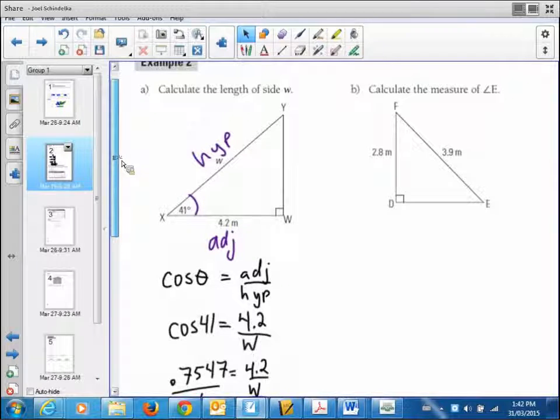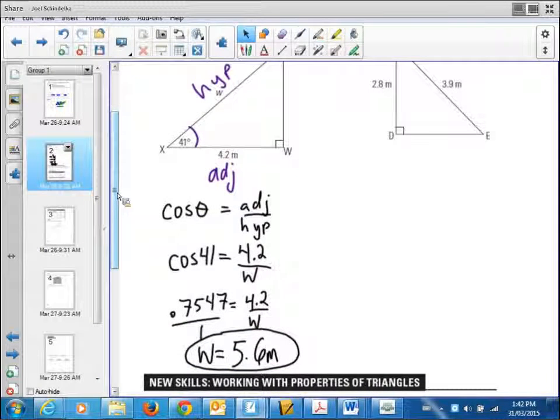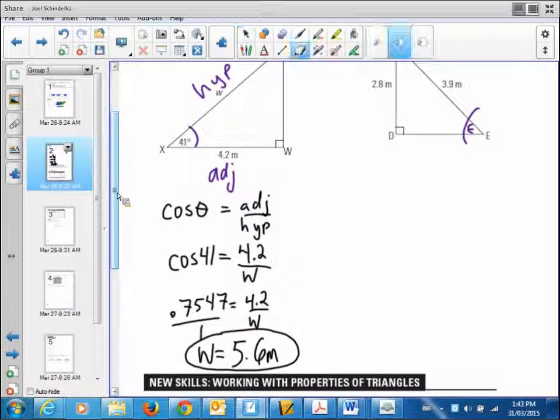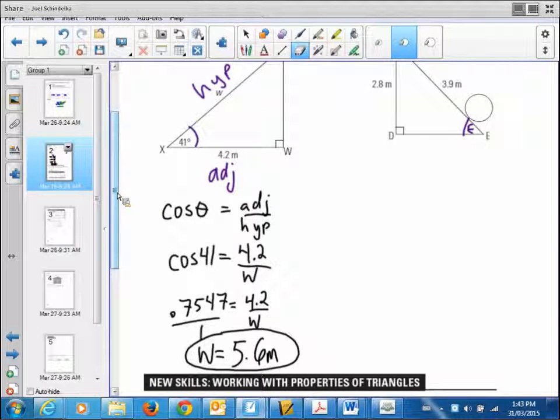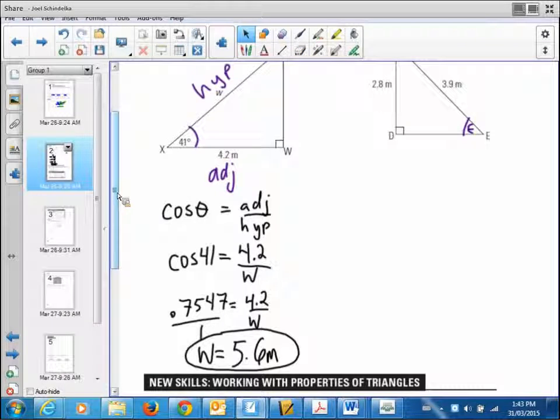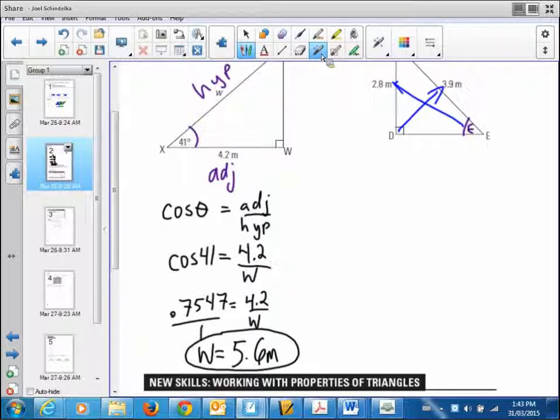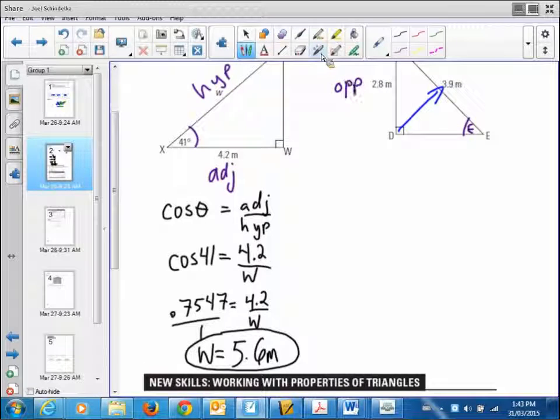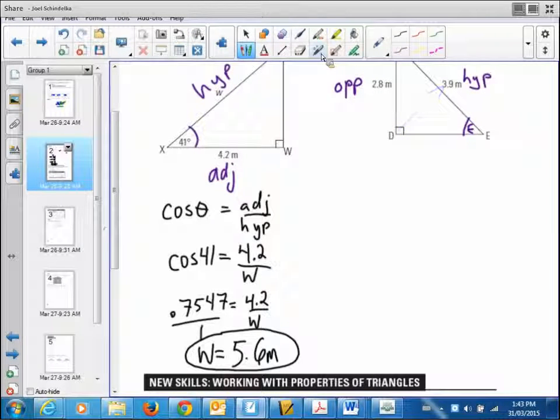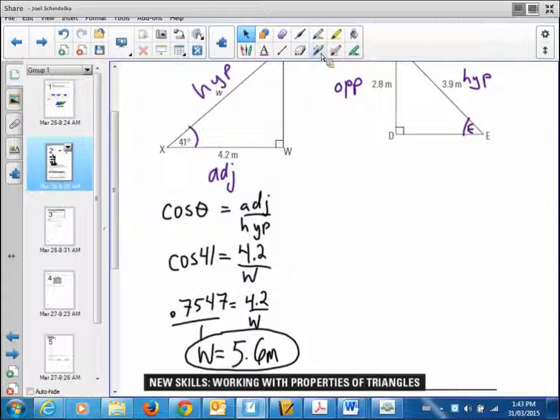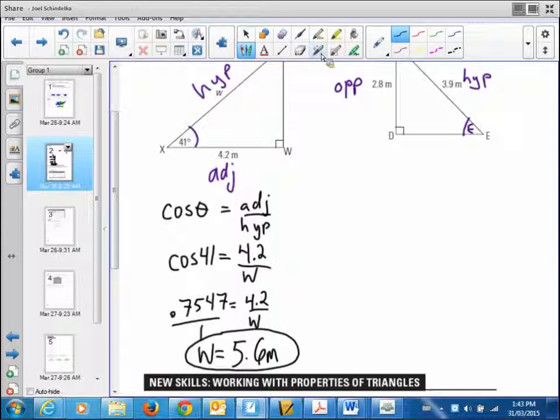What do I want to find here? Angle E. If I'm trying to find that, what would you call 2.8, that side? That's the opposite. What is this 3.9? Hypotenuse. Opposite and hypotenuse. SOHCAHTOA. It's definitely not tangent, opposite over adjacent. In this case, it's the S-O-H. It's the sine of an angle. So in this case, it's the sine of E. Why am I putting E there? Because that's the one we're trying to find. It says so, right?